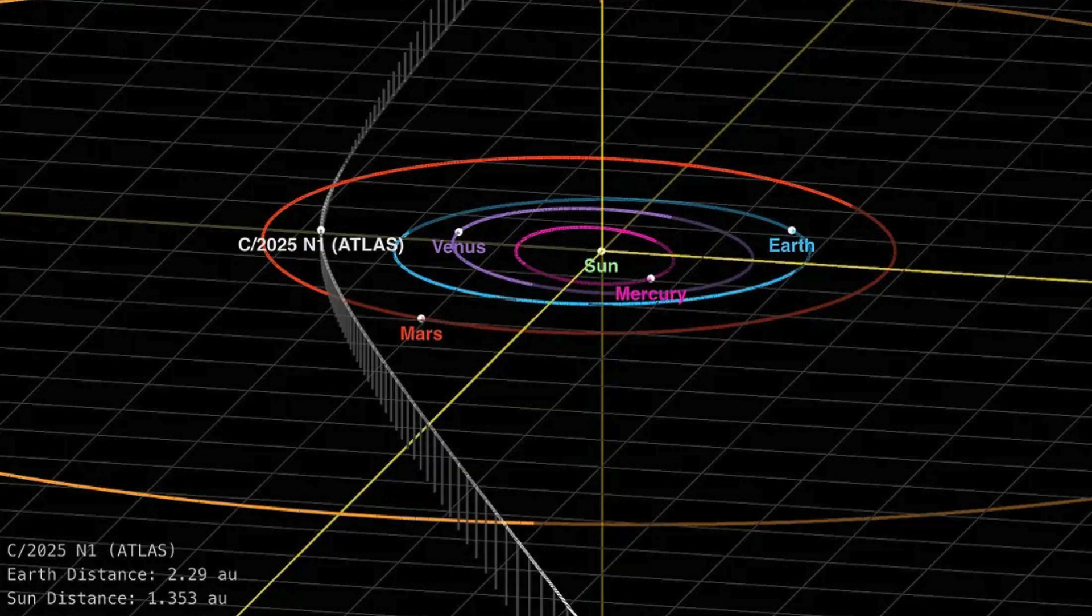That's right, the second interstellar visitor we've really tracked. And yeah, it's behaving in ways that they just don't quite fit the standard physics playbook. Exactly. So for this Deep Dive, we're really zeroing in on the absolute latest data coming in about 3I Atlas. Our mission, if you like, is to really unpack the implications of its recently measured non-gravitational acceleration.